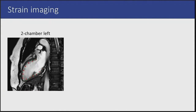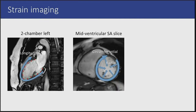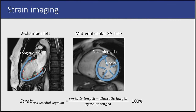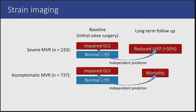Strain imaging allows for dynamic assessment of left ventricular function, reflecting the contractility of the myocardial wall. With MRI, strain can be measured longitudinally, but also circumferentially and radially. The strain of a myocardial segment is defined as the change in length from systole to diastole divided by its initial length. In MVR patients going for surgery, impaired global longitudinal strain, or GLS, has been identified as an independent predictor of left ventricular dysfunction and mortality. Similarly, studies in patients with AR and AS show that GLS is an independent predictor of mortality.